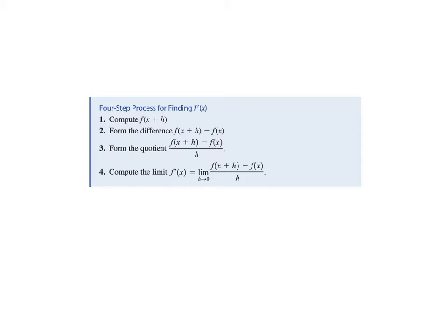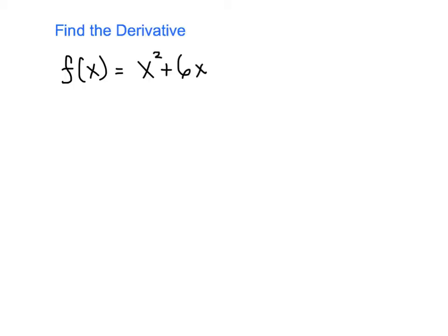We're going to find out later that the definition of derivative is not really the most efficient way to calculate a derivative. We spend a lot of our time learning rules that make it faster and more efficient. But it's also good exercise to practice using this definition. So here we go. Let's look at the function f of x equals x squared plus 6x. And we'll use the four-step process to find the derivative.